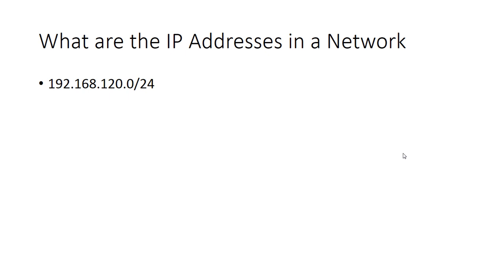Hello everyone. In this video I'm going to talk about how to find the IP address range of a network. A given network will have an IP address as well as a subnet mask. In this example, the subnet mask in CIDR notation is /24. So the first thing you need to do is to convert the subnet mask into dotted decimal format.